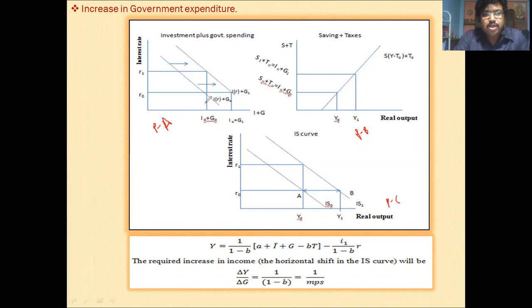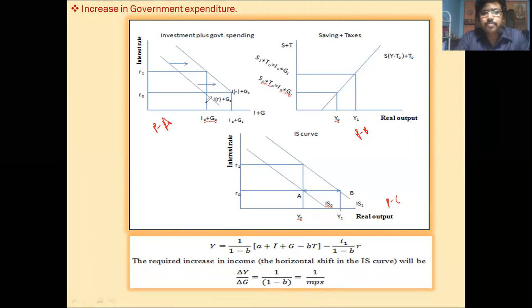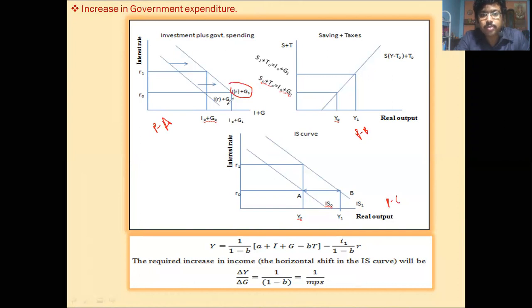So now, if government spending — government expenditure — increases, what does it affect? If there is an increase in government expenditure, then the IS curve will shift rightwards. That is the I+G1. Here government expenditure is G0, and here government expenditure is G1, and G1 is greater than G0.